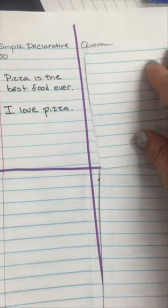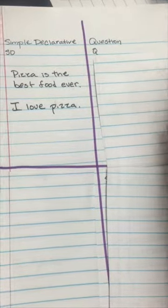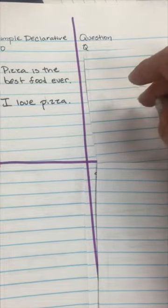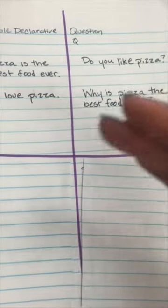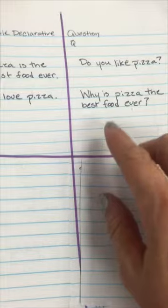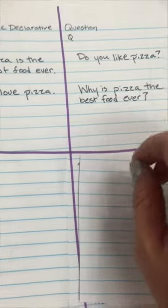The next type of topic sentence is a question. Kids just write down the Q. What's hard for them is it has to relate to your topic. So questions could be something like, do you like pizza? So my next sentence is going to tell you I like pizza for these reasons, or why is pizza the best food ever? I like pizza because this, this, and this.